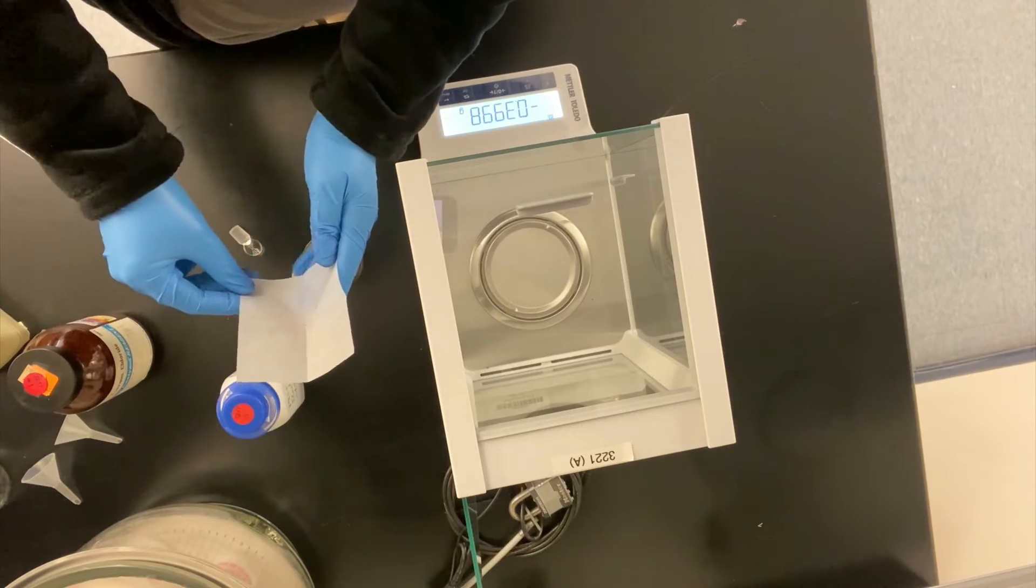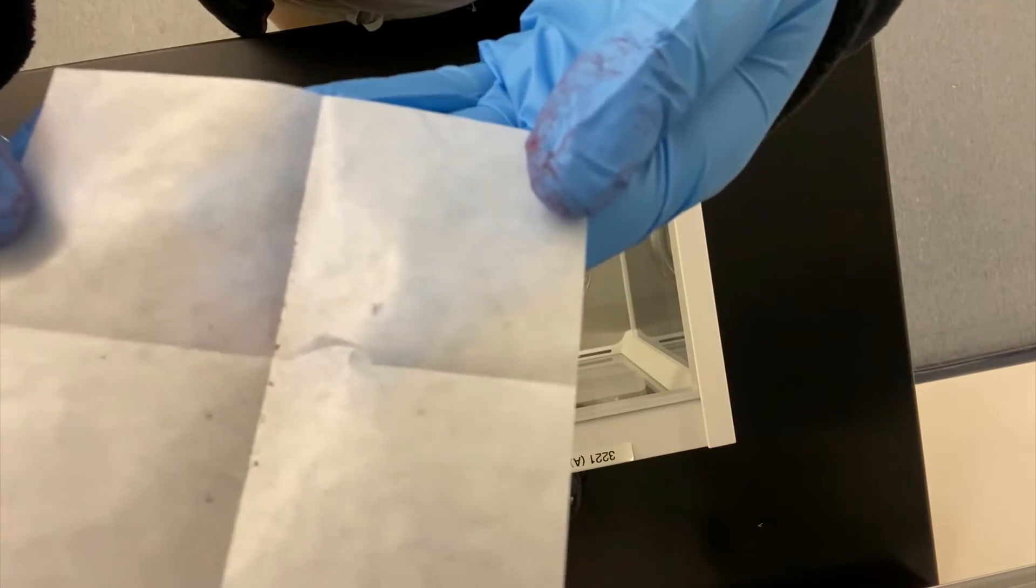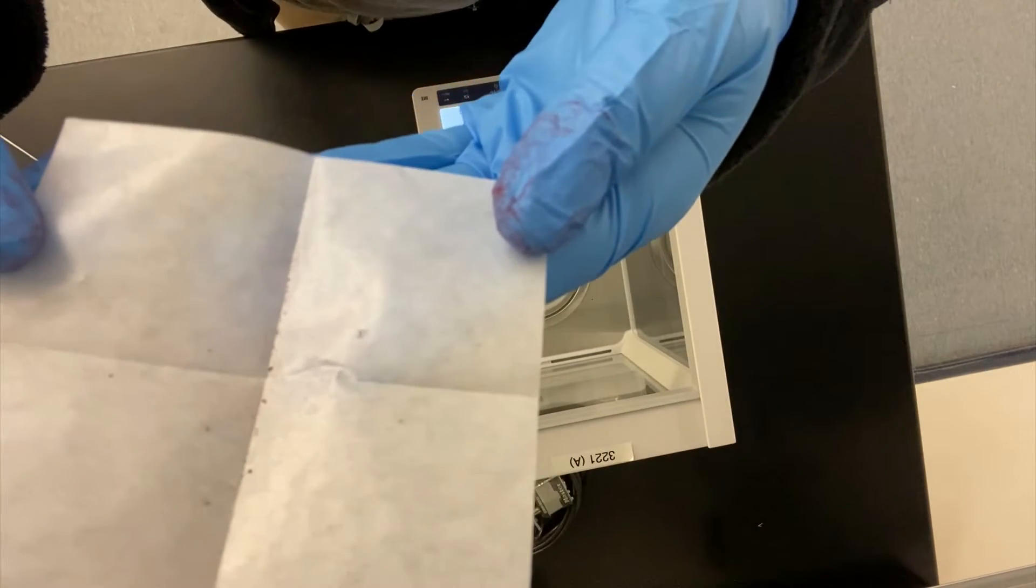After I add the solid to the volumetric flask, it's pretty clear that some of the dye that I weighed out is still on the weighing paper. The reason I used dye for this demonstration is that you can see the particles that are left behind. If I were weighing out a white solid on white weighing paper, you wouldn't see the residue, but it would still be there.